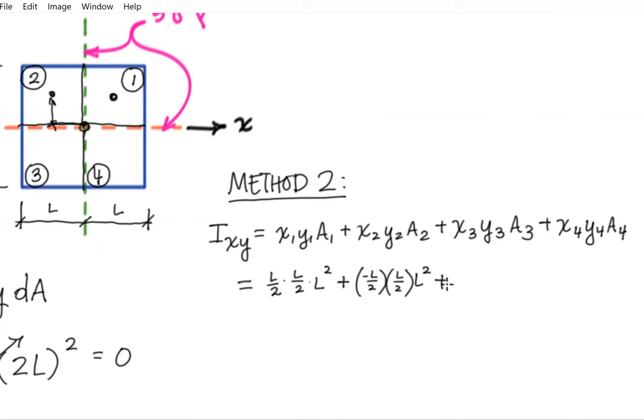Alright, next term, let's go to square number 3. Put a little dot at the center of that. Of course, my area is the same L squared. My X term and my Y term are going to be negative here. So I'll do a minus L over 2 and another minus L over 2.